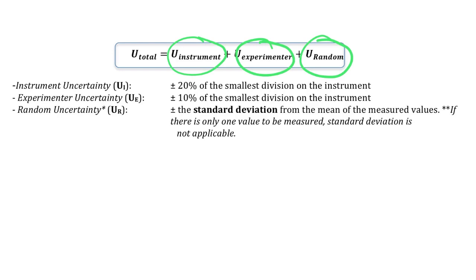For your course, each uncertainty has a specific way to be determined. For the instrument's uncertainty, it is plus or minus 20% of the smallest division of the instrument — and the smallest division refers to the precision of the instrument. For the experimenter's uncertainty, it will be plus or minus 10% of the smallest division of the instrument. And finally, for the random uncertainty, it is plus or minus the standard deviation from the mean of the measured values.